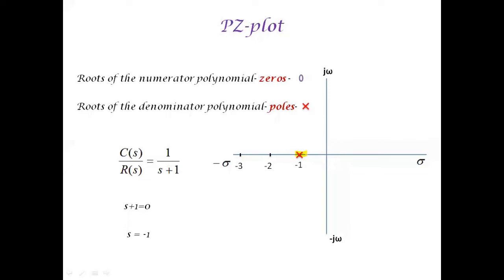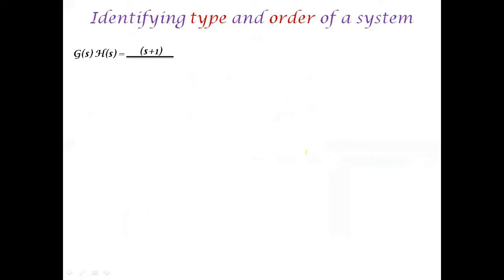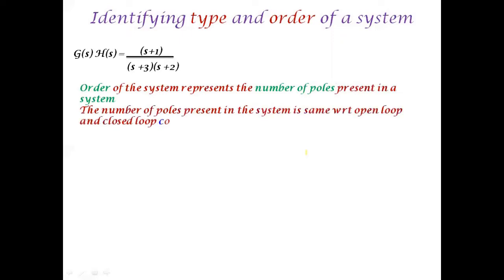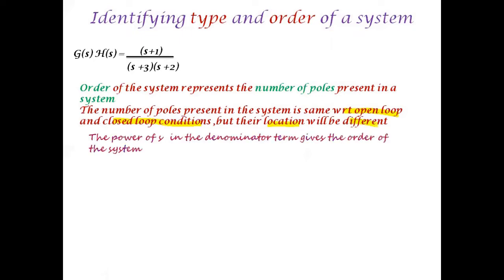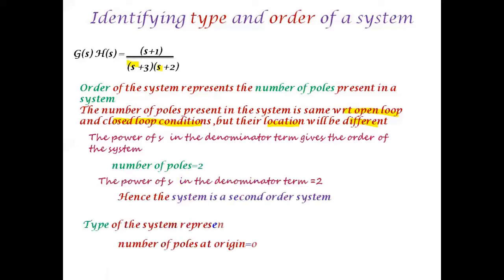Now you have familiarity with the pole-zero plot. I wanted to convey a few more basics related to identifying the type and order of the system. For G(s)·H(s) = (s+1)/[(s+3)(s+2)] with H(s)=1, the order of the system represents the number of poles. The highest power of s in the denominator is s²; hence it is a second order system. The number of poles is 2 (at s=−3 and s=−2), which justifies the order is 2.